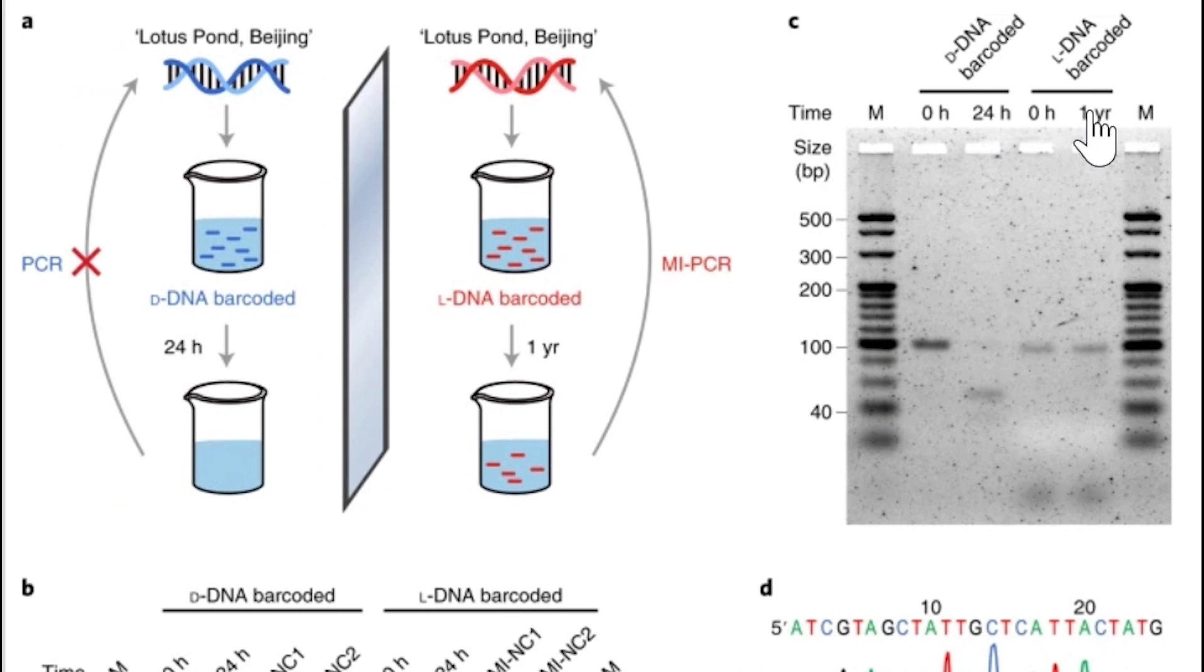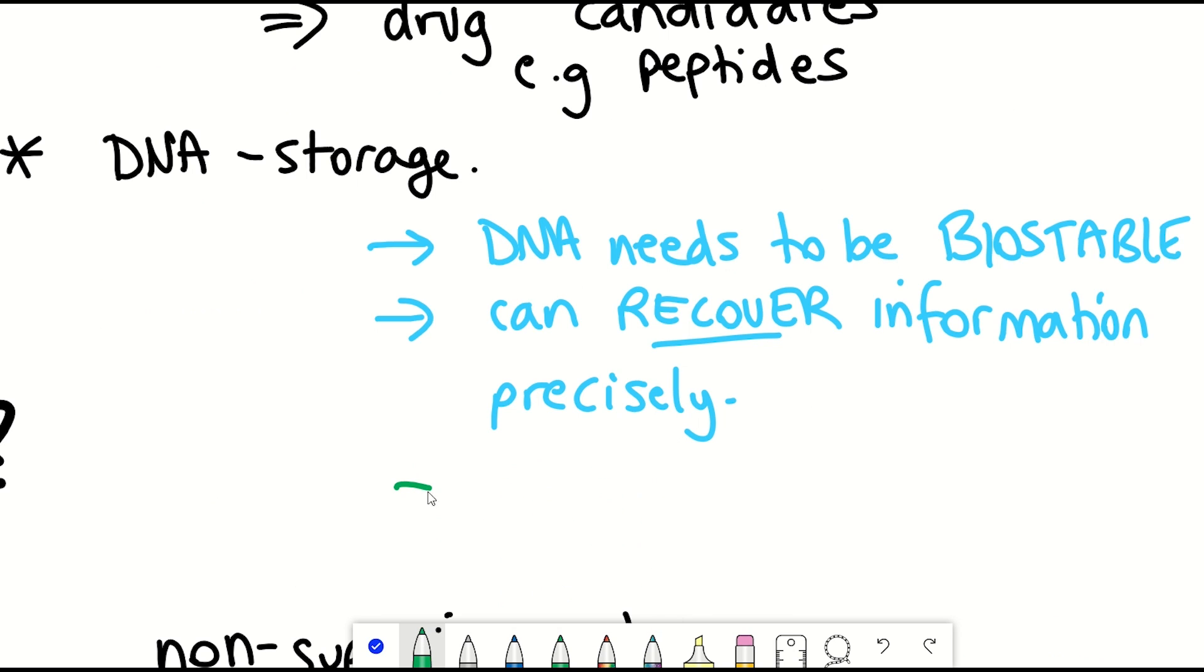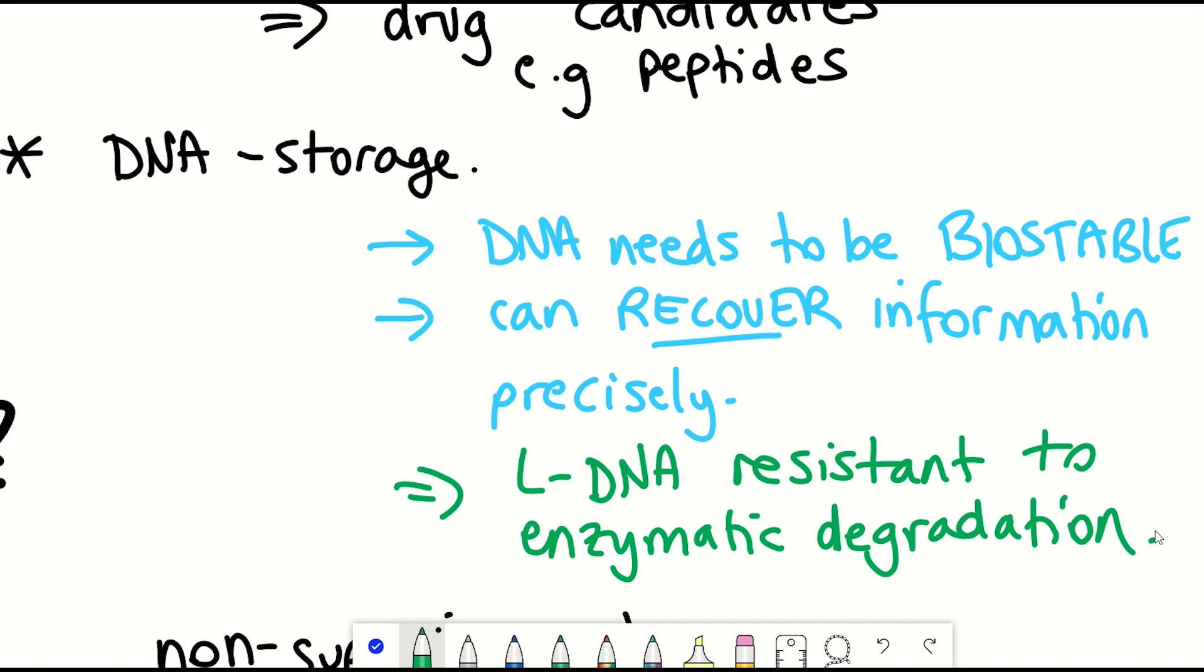And so the rationale for this is that the enzymes present in the pond sample that degrade DNA recognize the D version of DNA, not the mirror image L version of DNA. And so, therefore, DNA storage is a potential application of L-DNA.